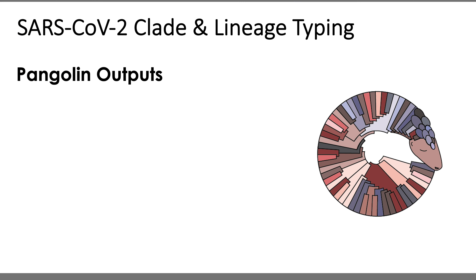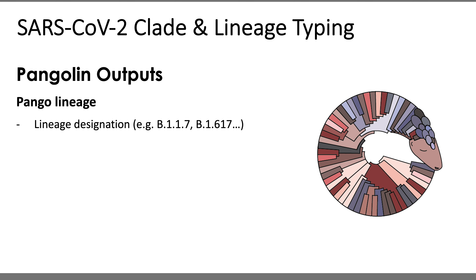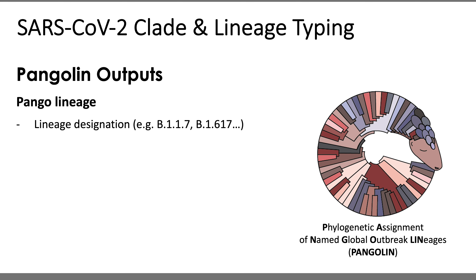Now let's talk about the critical outputs from Pangolin. First is the Pangolin lineage — the lineage designation made by the Pangolin software. For those wondering why it's called a Pangolin lineage rather than a Pangolin lineage, it's because Pangolin stands for Phylogenetic Assignment of Named Global Outbreak Lineages. So to avoid redundant use of the word lineage, the appropriate nomenclature is pango lineage. While Nexclade will try to make a clade designation regardless of assembly quality, Pangolin — at least by default — will not make a lineage designation for samples with assemblies made up of over 50% Ns or a genome length of less than 10,000 base pairs. If the sample has a poor assembly that falls below these metrics, you'll see a 'none' in the pango lineage output field.